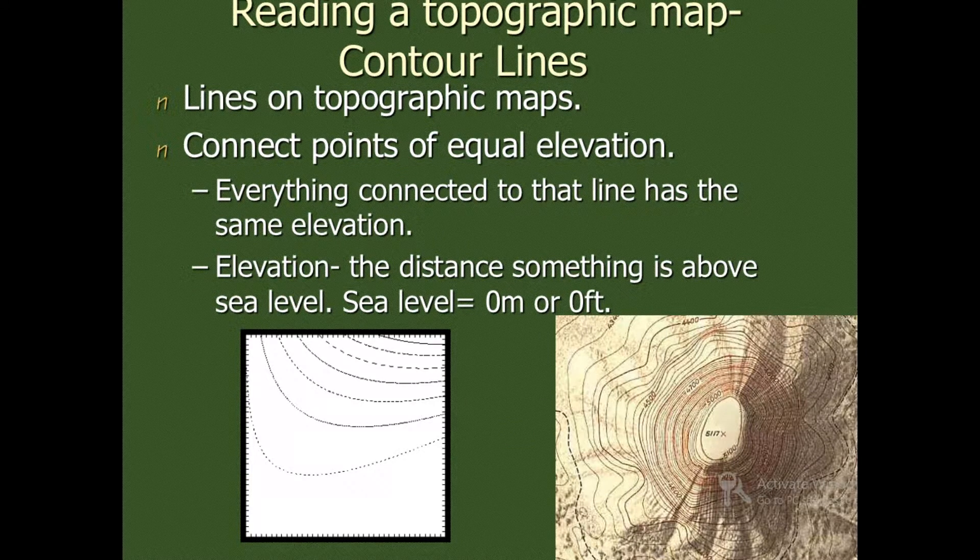Reading of a topographic map or contour lines is very important in our understanding of how we can understand the features of the Earth on the map. Contour lines are lines on the topographic maps. Contour lines connect points of equal elevation on the surface of the Earth.